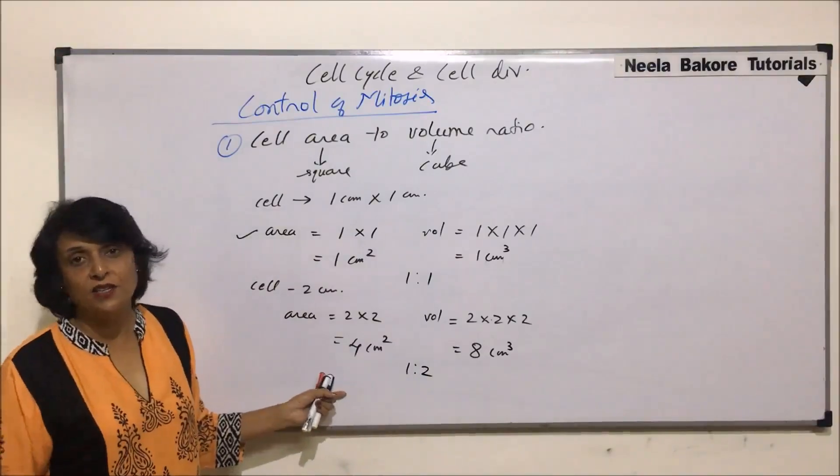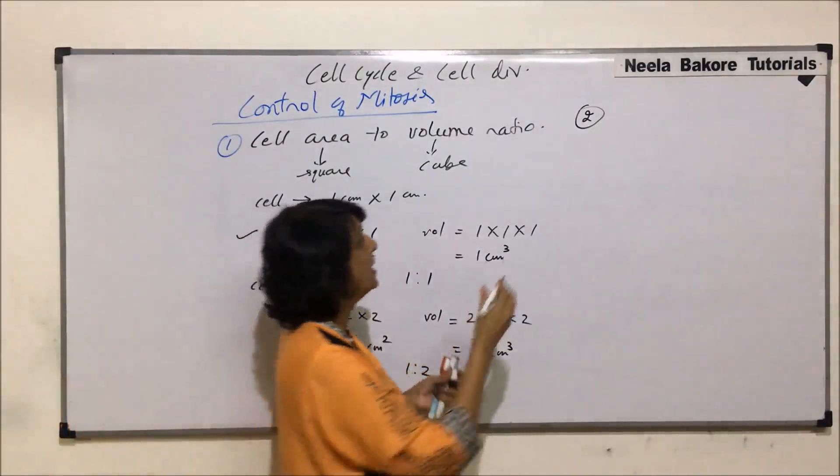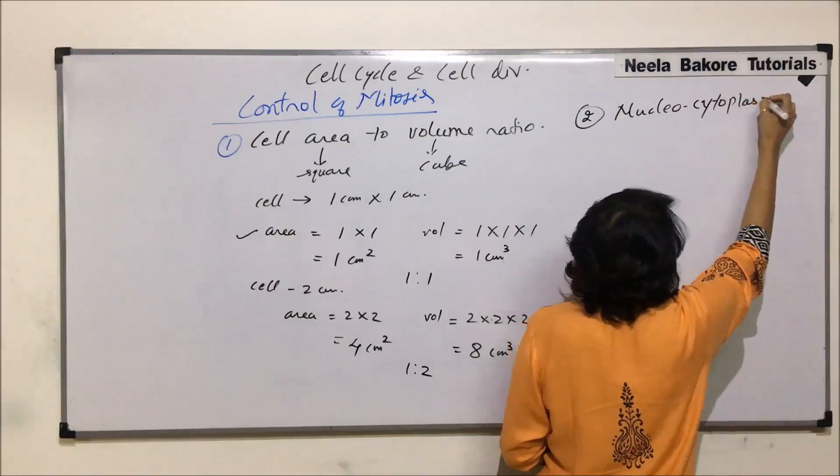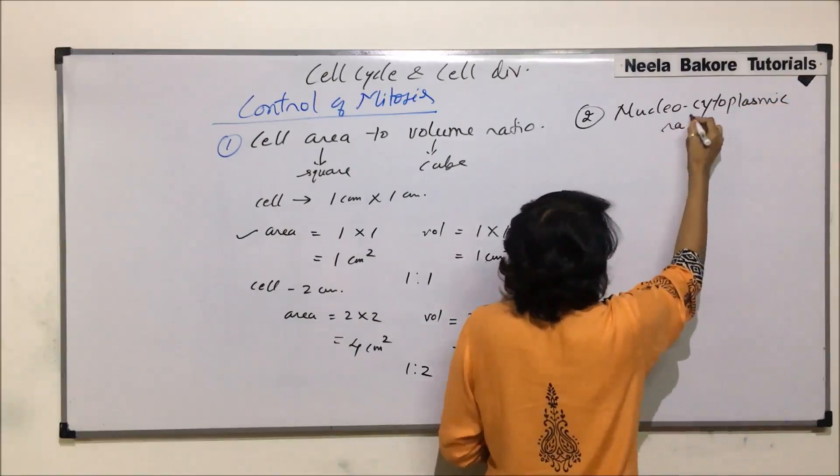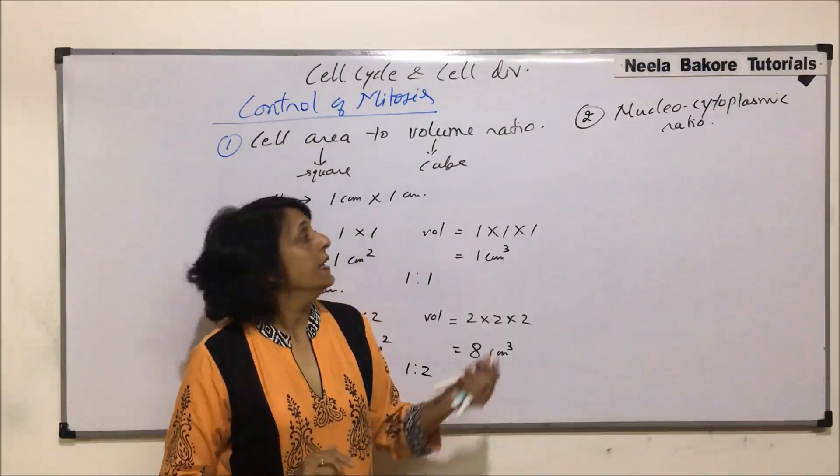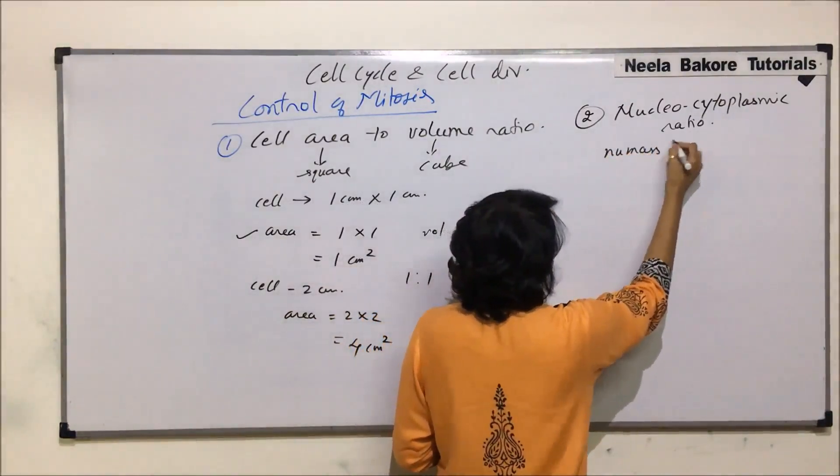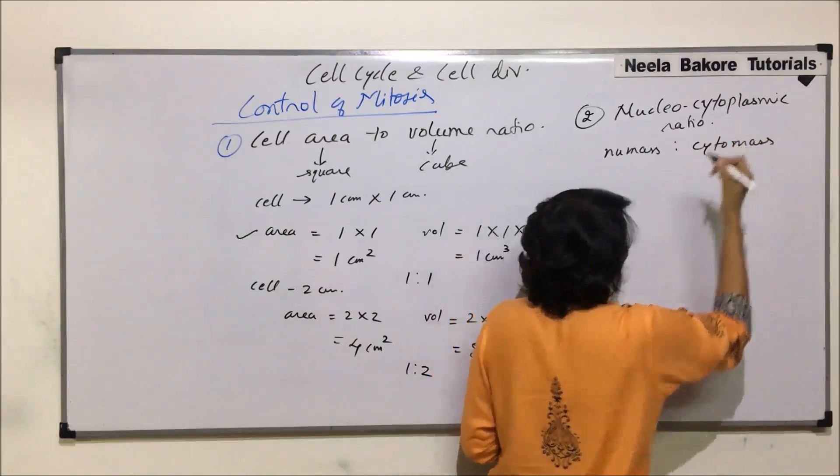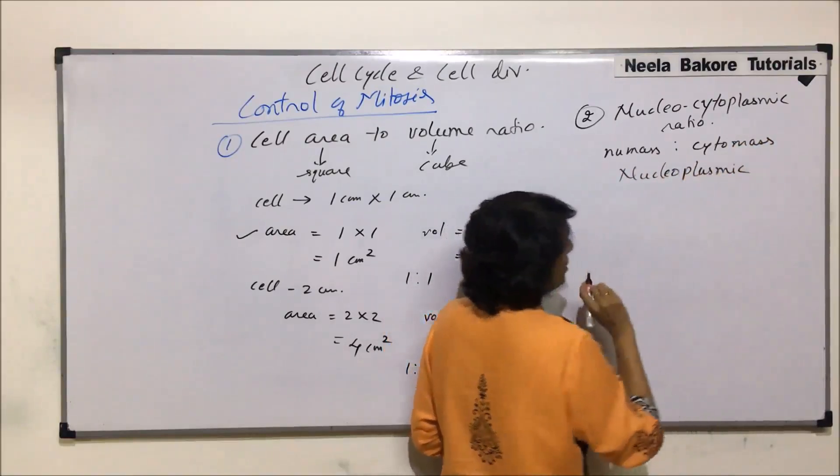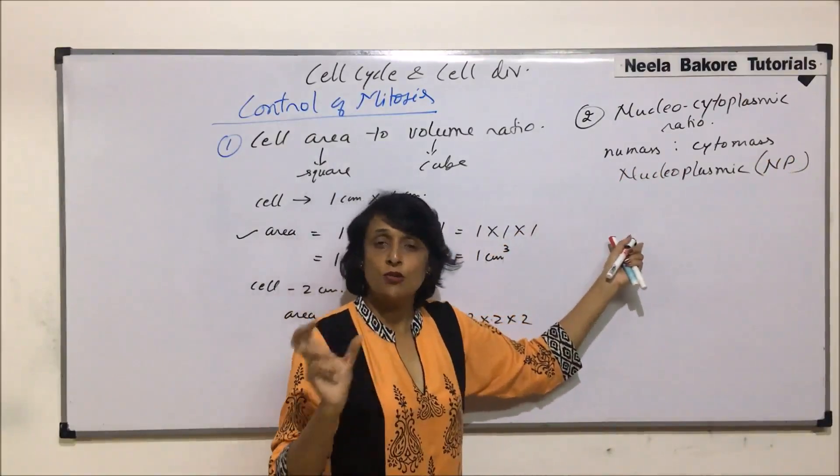The second theory or reason for cell division or mitosis is nucleocytoplasmic ratio. This is also believed to change or is responsible for cell division. What exactly is nucleocytoplasmic ratio? Here the ratio is of nuclear mass to cytoplasmic mass and it is written as nucleoplasmic ratio. And the abbreviation which is used is NP, nucleoplasmic. So it is nuclear mass to cytoplasmic mass.